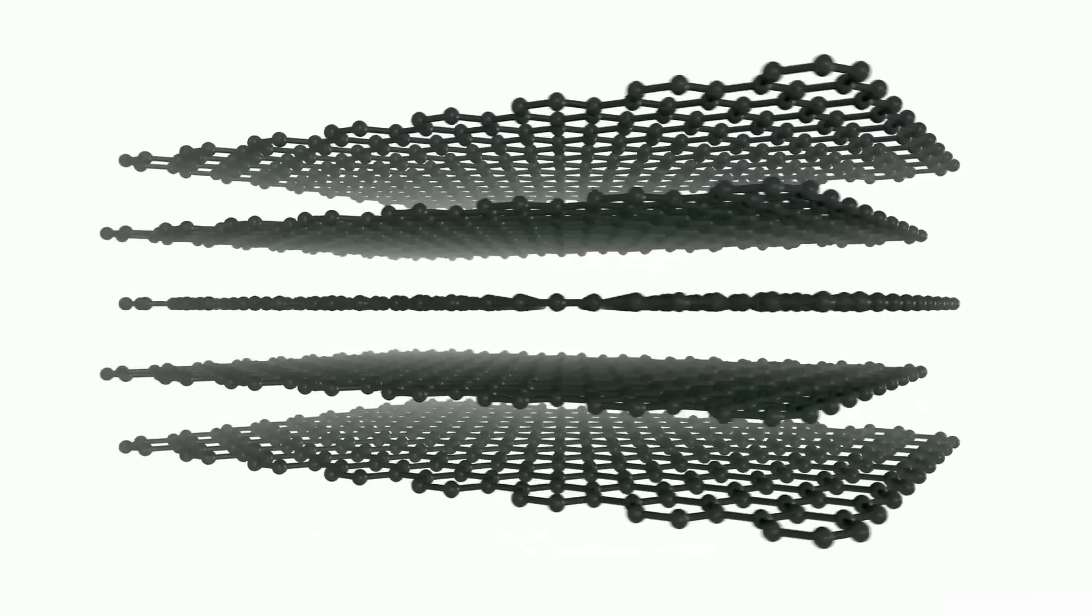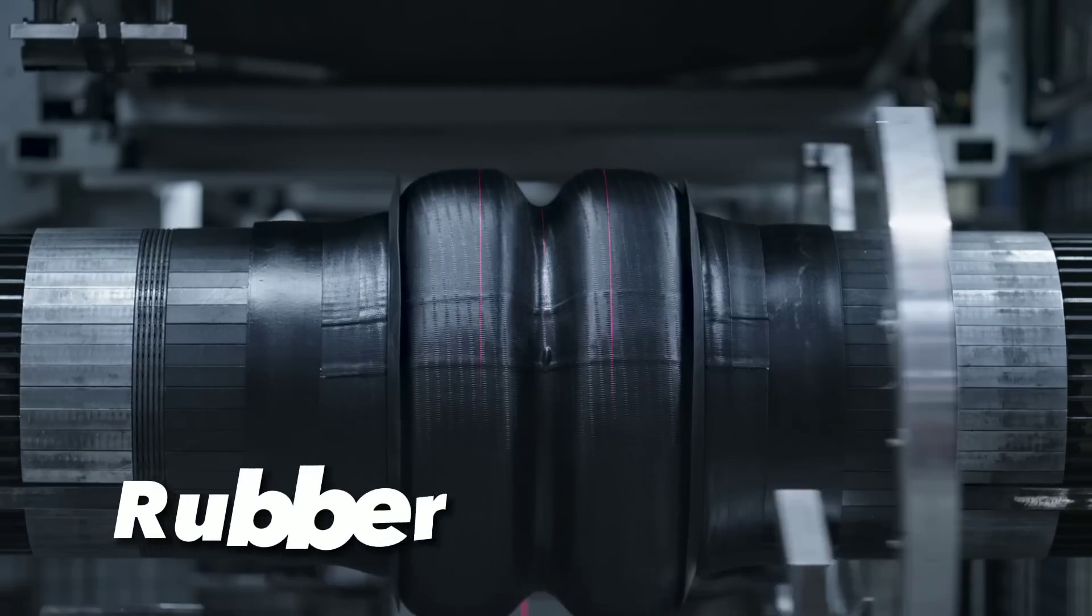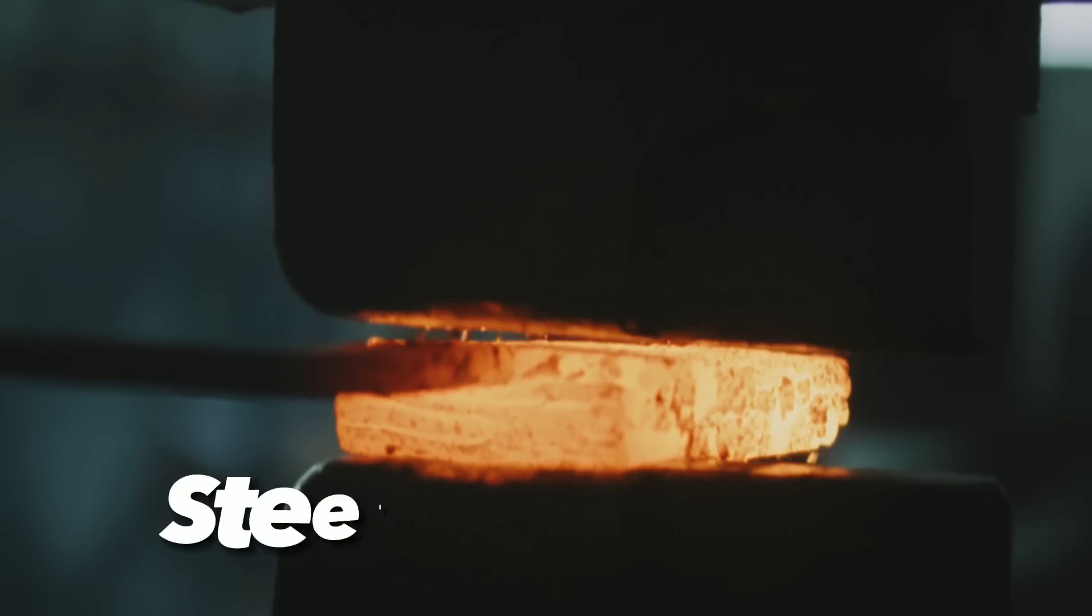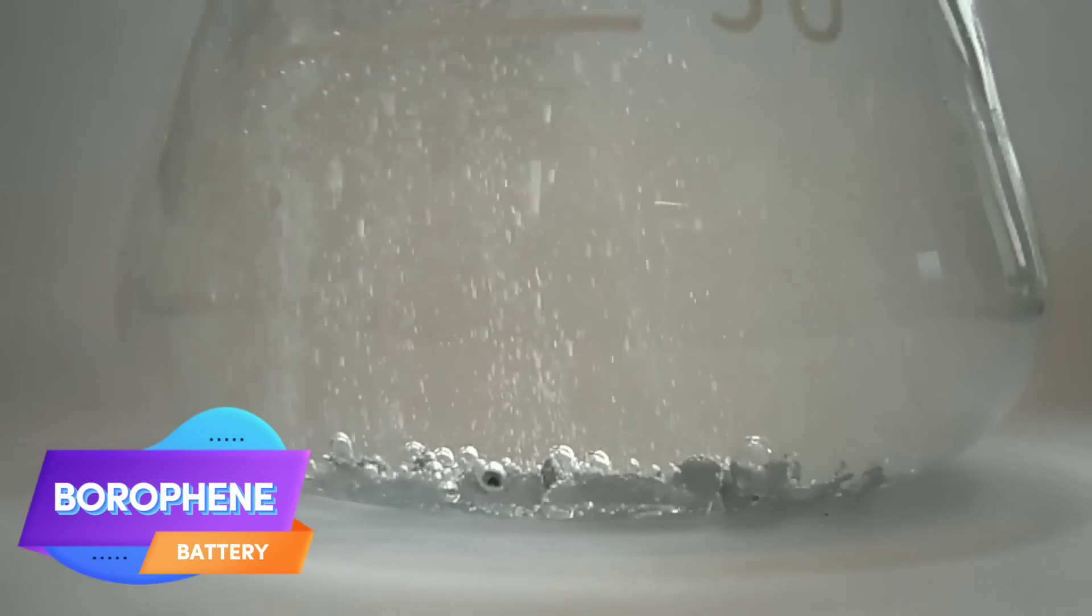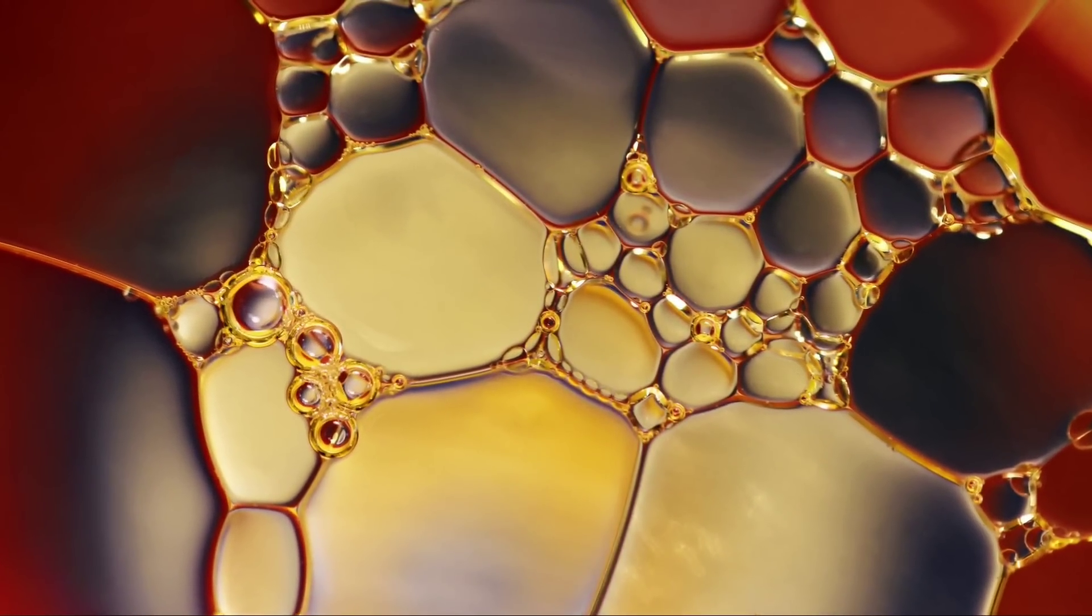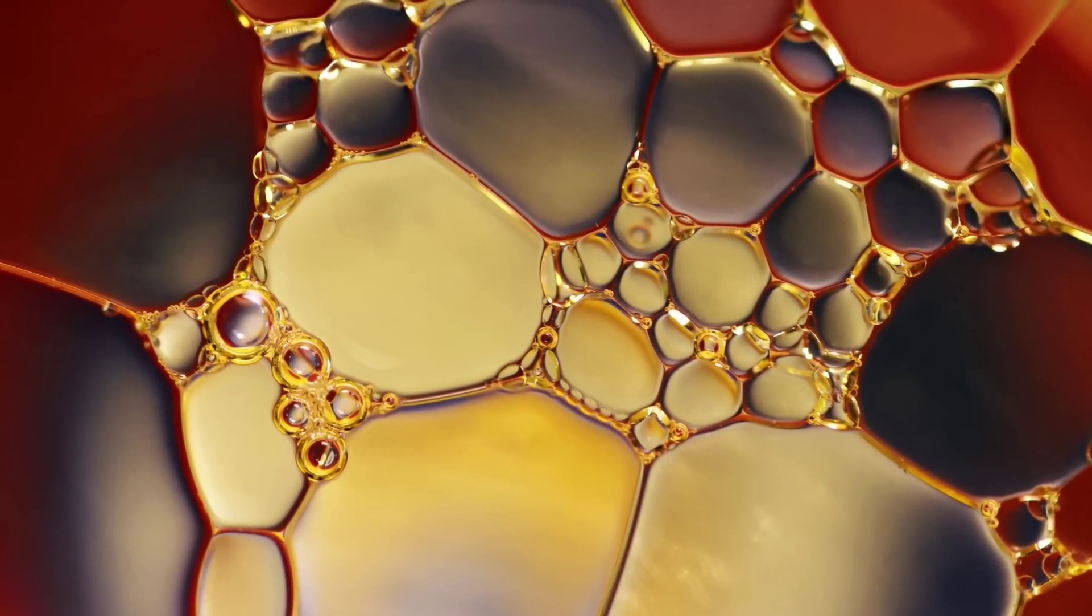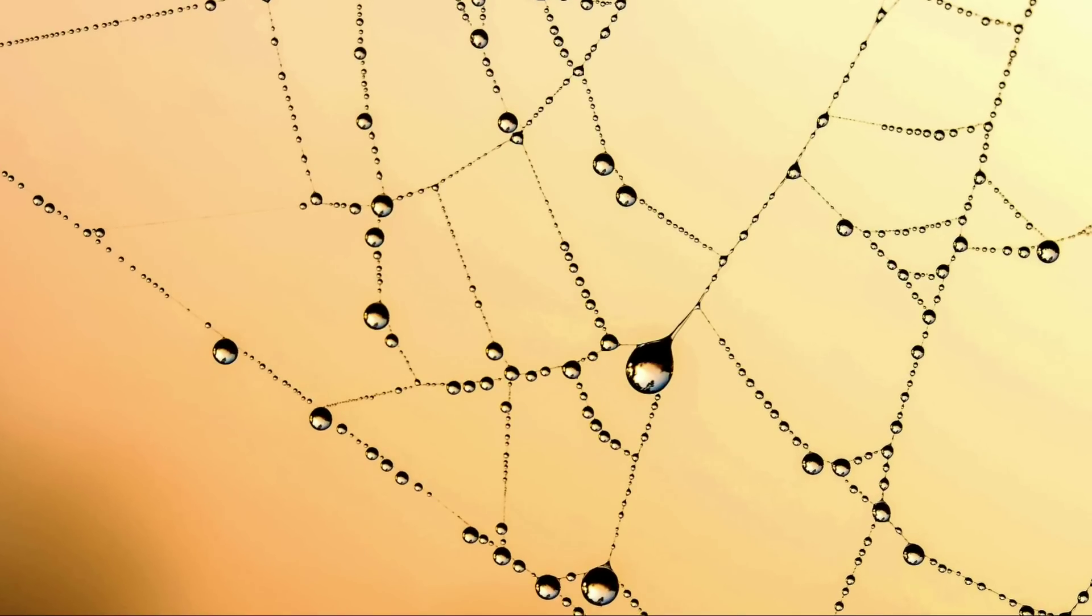Graphene is a remarkable material with unique properties. For example, it is harder than diamond, more elastic than rubber, stronger than steel and lighter than aluminum. But what if there is a material that can surpass graphene in strength and flexibility? This material is borophene and in this video we will explore why borophene is the new wonder material.